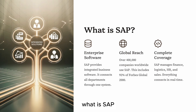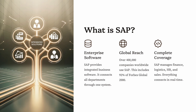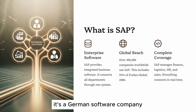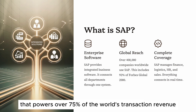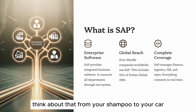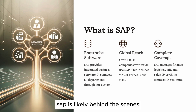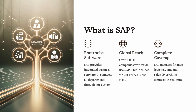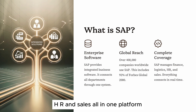What is SAP? Let's talk about SAP itself. SAP stands for Systems, Applications, and Products. It's a German software company that powers over 75% of the world's transaction revenue. Think about that — from your shampoo to your car, SAP is likely behind the scenes. SAP's ERP system helps businesses integrate departments like finance, logistics, manufacturing, HR, and sales, all in one platform.